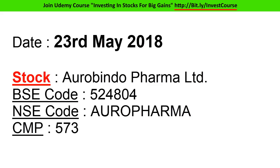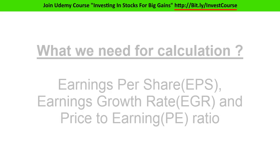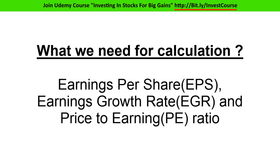In this video we will calculate intrinsic value for Aurobindo Pharma because it is consistently increasing its net sales but its stock prices are falling. I am creating this video on 23rd May 2018, so if you are watching near the creation date you have time to see Aurobindo Pharma's performance relative to our estimated intrinsic value. The things we need to calculate intrinsic value are: earnings per share, earnings growth rate, and price-to-earnings ratio.